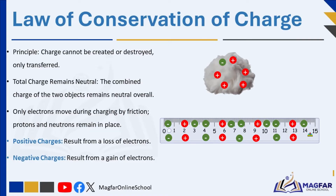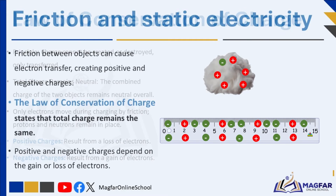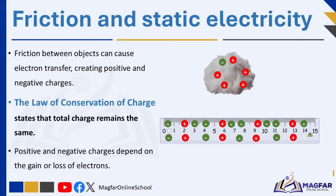Charge is never created or destroyed. Negative charges — electrons — are transferred from one object to another. This means that if a material receives a negative charge through friction, the material it is rubbed with will obtain an equal positive charge. Only electrons can be removed from or added to materials. Therefore, positive and negative charges are always expressed in terms of gain or loss of electrons. Positive charges arise from a loss of electrons; negative charges arise from a gain of electrons. Protons and neutrons don't move and are never transferred through friction.